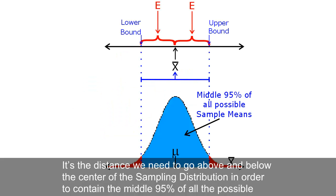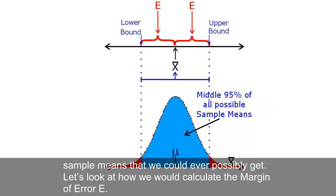Remember where this distance originally came from? It's the distance we need to go above and below the center of the sampling distribution in order to contain the middle 95% of all the possible sample means that we could ever possibly get. Let's look at how we would calculate the margin of error E.